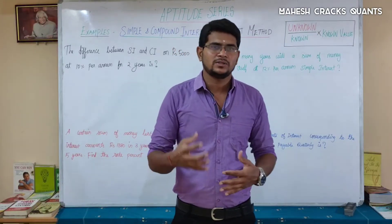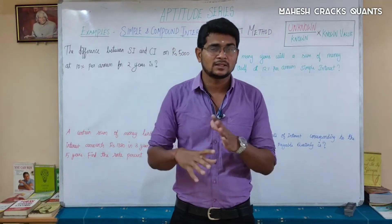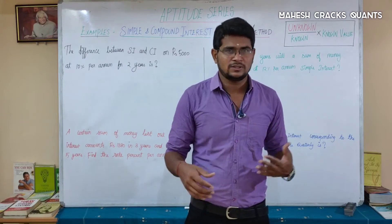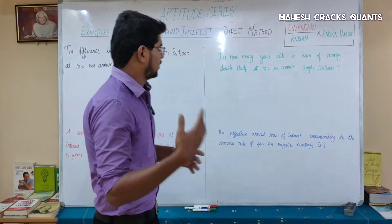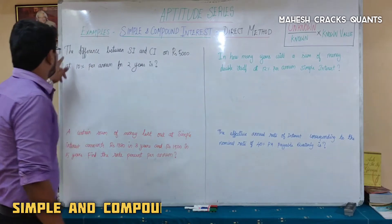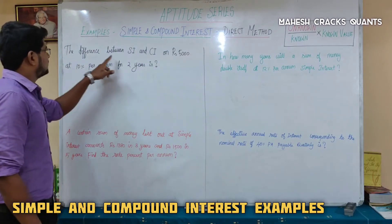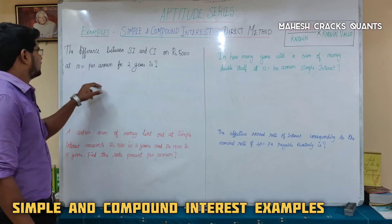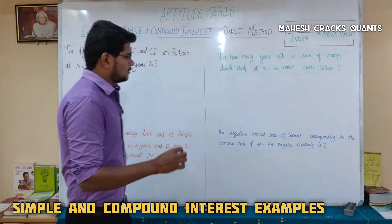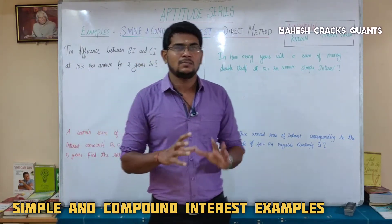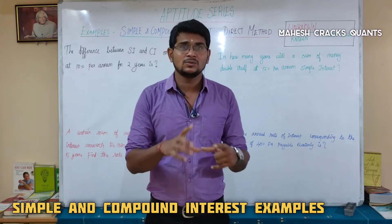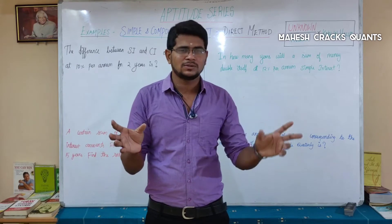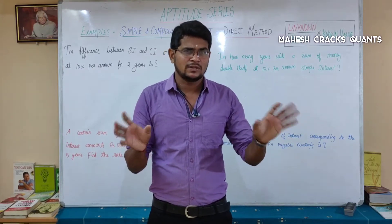We will talk about a continuation of Simple Interest and Compound Interest examples. For the first question: the difference between Simple Interest and Compound Interest on Rs. 5000 at 10% per annum for 2 years. Simple Interest is a direct increase, while Compound Interest is a successive increase.